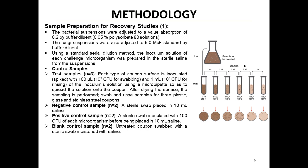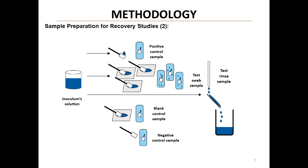We also prepared various control samples: negative controls (sterile swabs in saline), positive controls (swabs inoculated with known quantities of microorganisms), and blank controls (untreated coupons swabbed with sterile saline). After allowing time for the inoculum to dry on the surfaces, we performed our sampling methods — either swabbing or rinsing — then plated and incubated the samples for enumeration. This process was repeated for each of our five test microorganisms and on each of our three surface materials. It's a labor-intensive process, but this thoroughness is crucial for ensuring the reliability and reproducibility of our results.